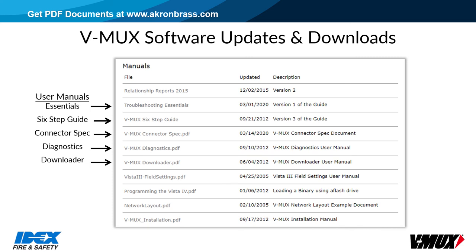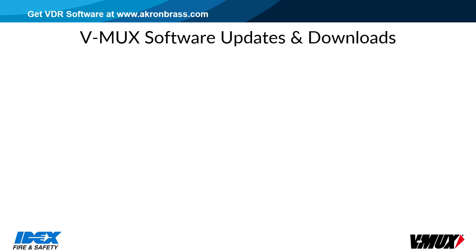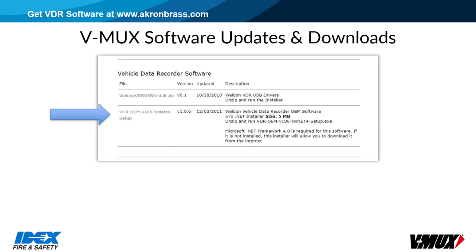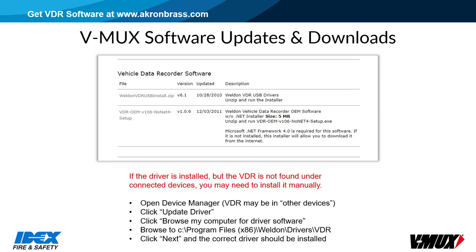The troubleshooting essentials and the VMux connector spec documents cover much of the information discussed in this video. The vehicle data recorder software installer includes the VMux extraction, viewer, and configuration tools. The USB driver is required to connect to the VMux port, but VMux connection can also be done through the VMux transceiver. There have been recent incidents where the VDR USB driver is not recognized and an incorrect Microsoft driver gets installed for the VDR. To correct this problem, you can install the driver manually, but only after running the VDR USB installation file. Open Device Manager — the VDR may be in other devices. Click Update Driver, then Browse My Computer for Driver Software. Browse to drive C, Program Files, x86, Weldon, Drivers, VDR. Click Next, and the correct driver should be installed.